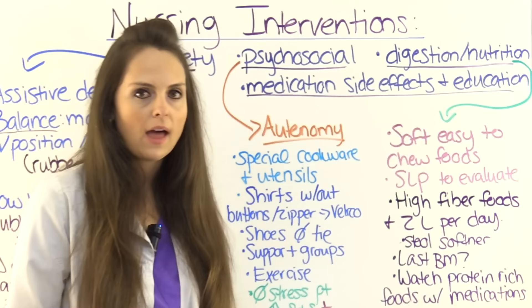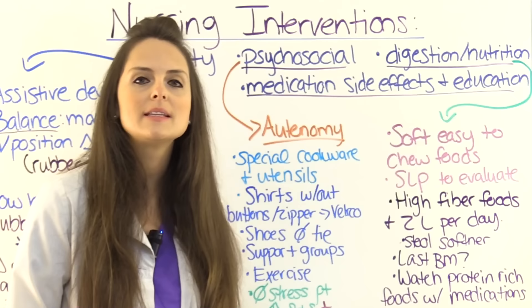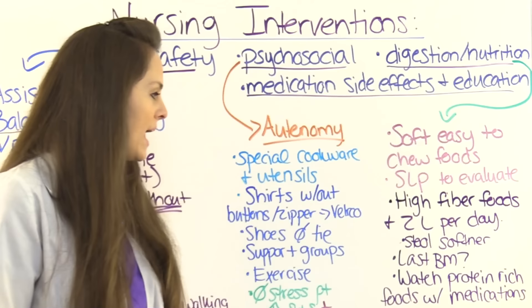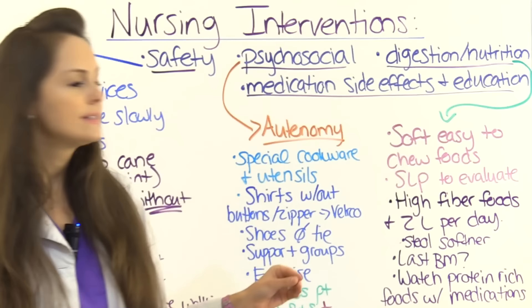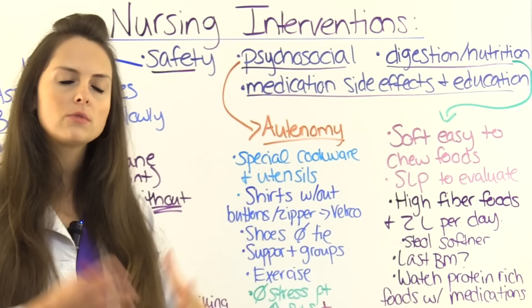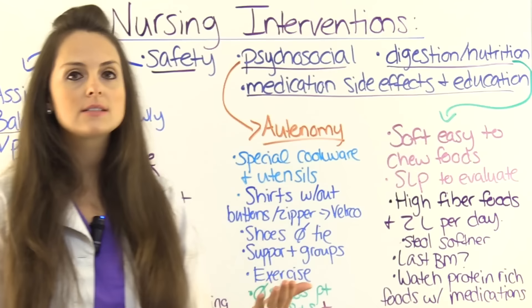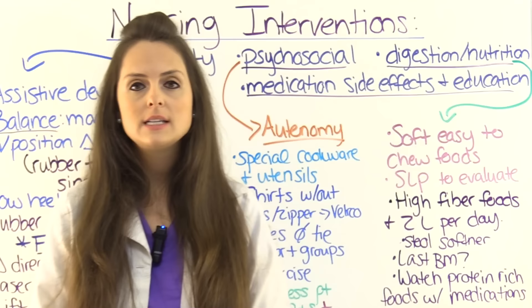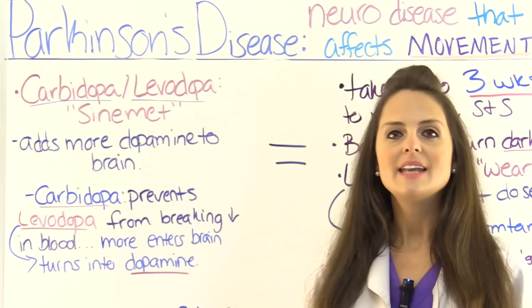Per MD order, patients can take a stool softener to keep stools soft. As a nurse, ask about their last bowel movement, look at the abdomen, listen for bowel sounds, and palpate to make sure you don't feel any hard masses. An important education point is that patients need to watch their protein intake — they need protein, but they don't want to eat a protein-rich meal when they take their anti-Parkinson's medication, because some of these medications compete with protein in the small intestine, which will decrease the absorption of the medication.